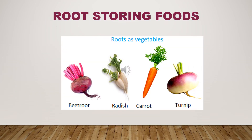As you can see in some pictures here, these are some special roots which store food in them, like beetroot, radish, carrot, turnip, etc. These special roots can be eaten both raw and in cooked form.